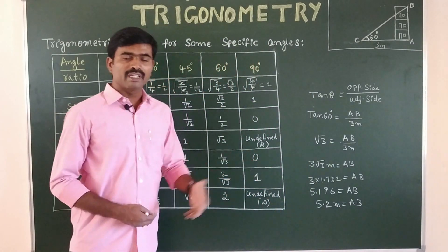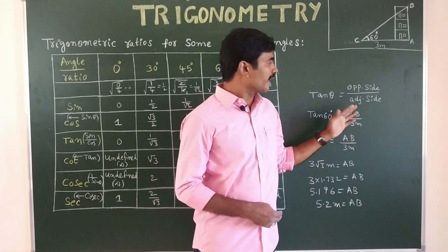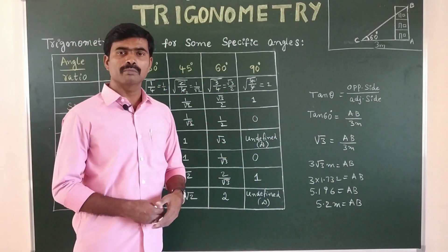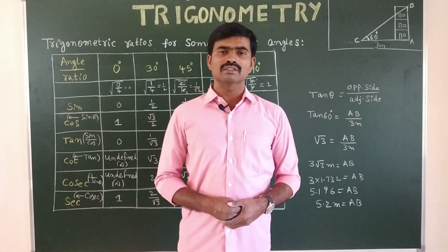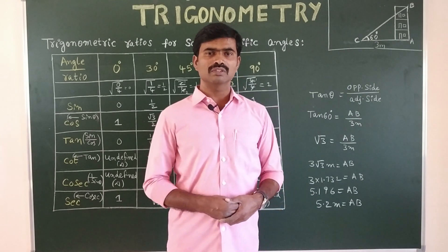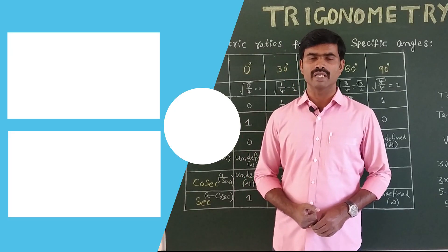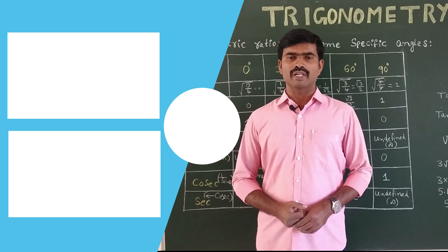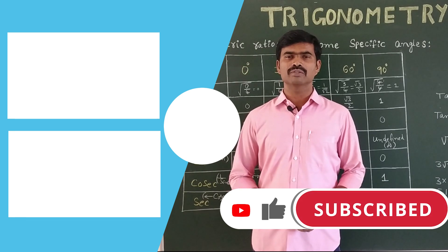This is a very easy concept. Without climbing towers, trees, or mountains, we can find heights using trigonometric ratios and trigonometric ratios for specific angles. With this information, we can find the height of trees, width of rivers, height of buildings, height of mountains, or depth of waterfalls. In the next video, you will learn about trigonometric identities and trigonometric ratios for complementary angles. If you liked this video, please like and share it with those who need math basics, and subscribe for more videos. Thank you for watching.